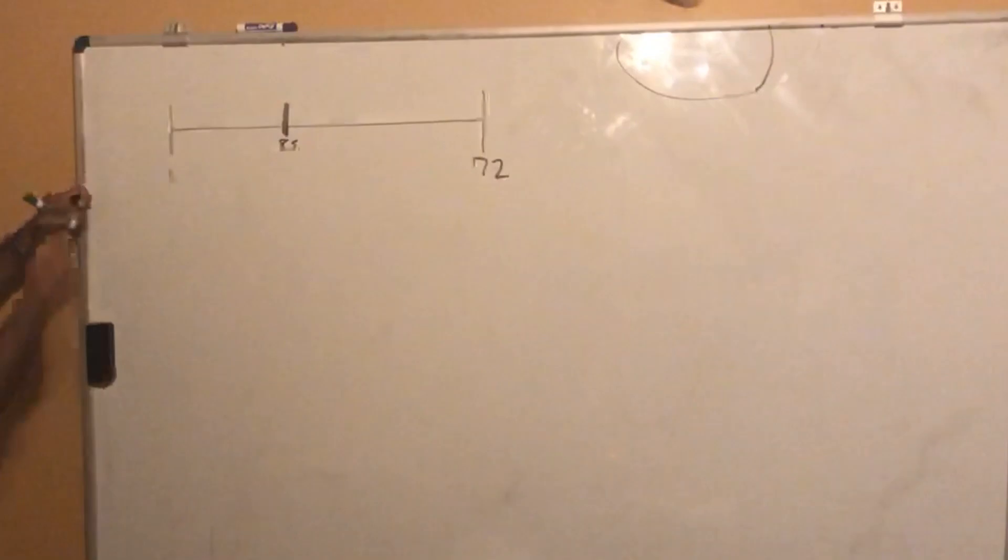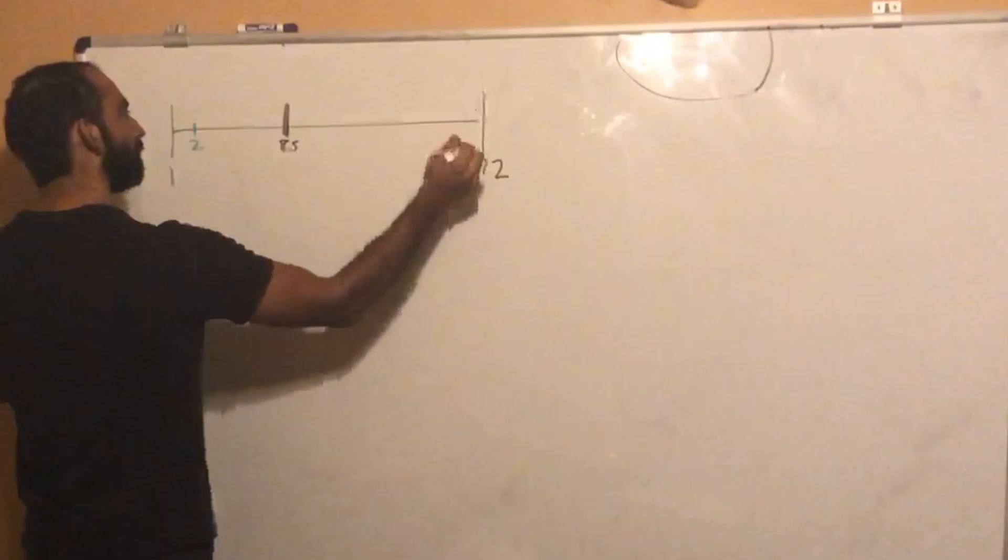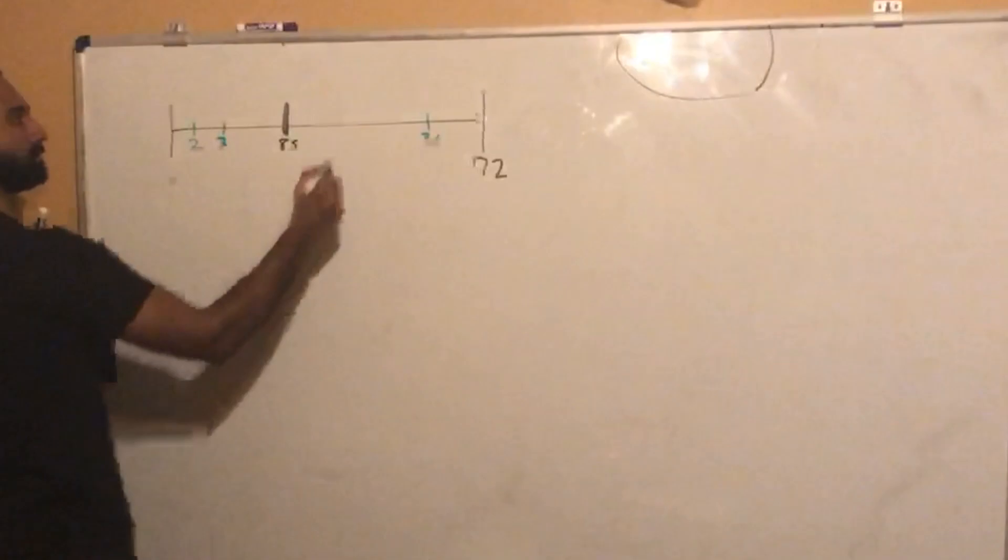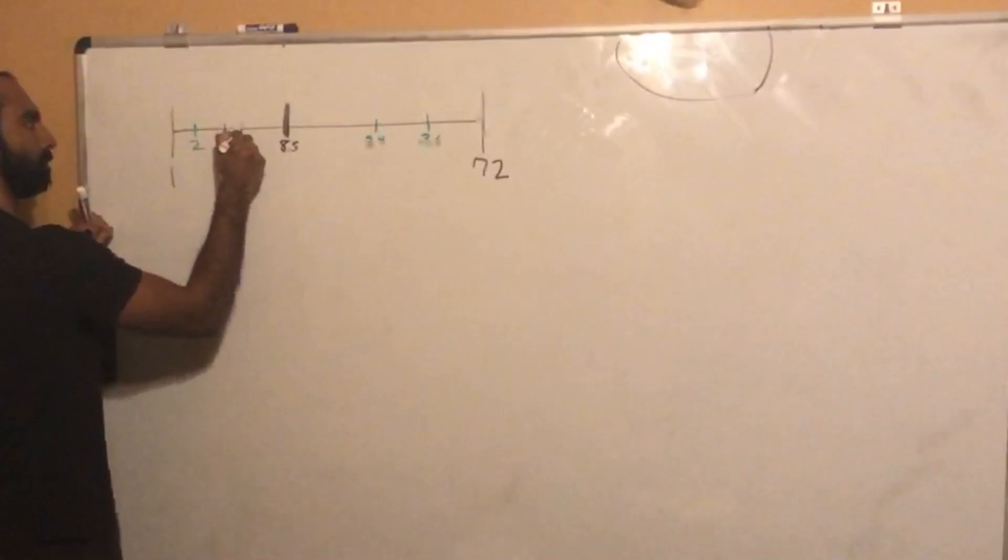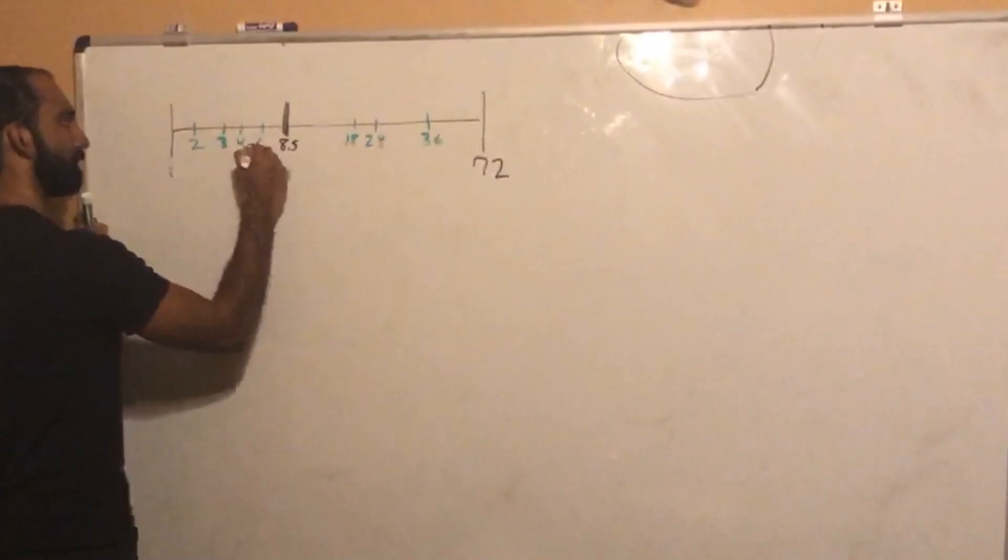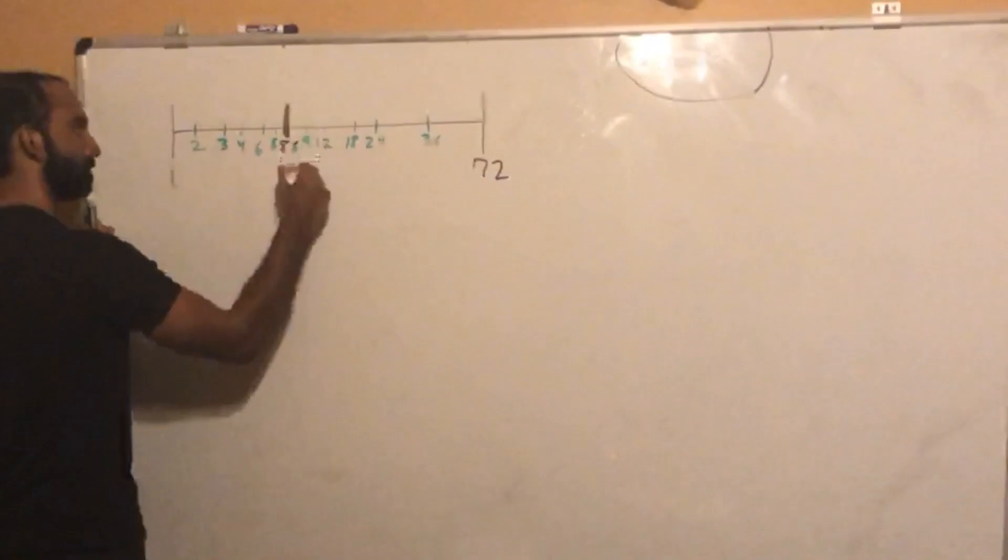2 works, somewhere to the left of 8.5. If 2 is a factor, what else is a factor? 36. 2 times 36 is 72. 3 and 24. Anything else? 4 and 18. Any more? 6 and 12. 8 and 9. So we got 1 right up against the 8.5, and we have 9 right there.